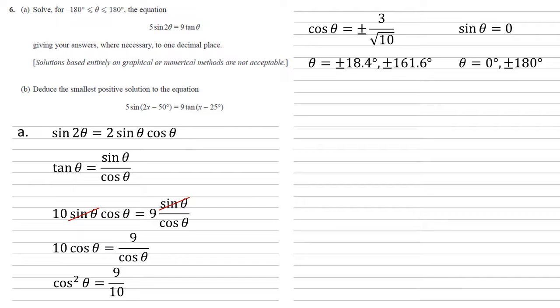Now for part b, we need to deduce the smallest positive solution to the equation 5 sine 2x minus 50 equals 9 tan x minus 25. Now comparing this to our original equation, we can see that it's the same equation, except we've just substituted x minus 25 in for the original theta. So we've got theta equals x minus 25.